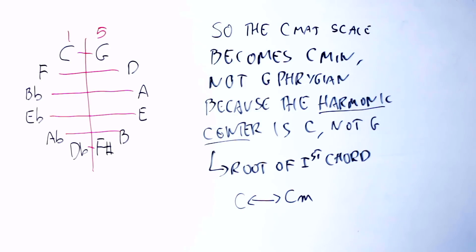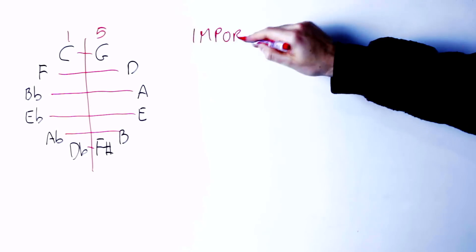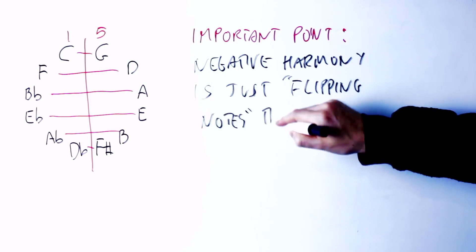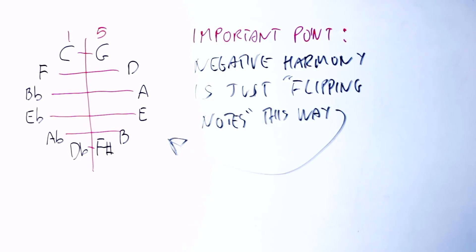So in the melodic sense, yes, this C major becomes G Phrygian, but in the harmonic sense, which is the way we hear, this scale here is the scale of C minor, not G Phrygian. Either way, the important point here is that negative harmony is just flipping these notes around this way.